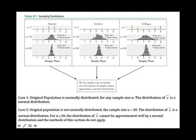Same idea when the original population is not normally distributed: if we keep increasing the sample size until n equals 50, we can see the distribution becomes normally distributed. We don't really need to increase all the way to n equals 50 — the Central Limit Theorem states that when n is greater than 30, that will be good enough.